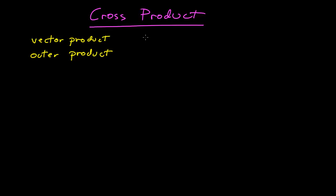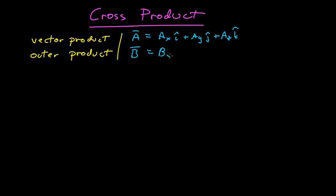For the cross product, if we have two vectors, say A, which in component form would have an x component, a y component, and a z component, and a vector B would have the same. We want to compute the cross product, which we would write as A, then a large times sign, cross B.